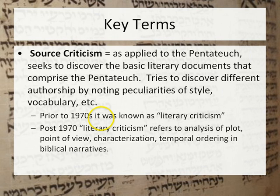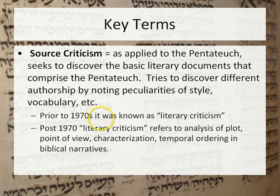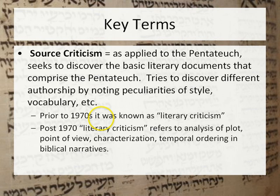You need to know for the test the difference between three types of criticism. Source criticism, as applied to the Pentateuch, seeks to discover the basic literary documents that comprise it. It tries to discover different authorship by noting peculiarities of style or vocabulary. Prior to the 1970s it was called literary criticism, but after the 1970s, literary criticism was used to apply to the analysis of literature — plot, character, point of view, temporal ordering. So source criticism is the preferred term now.